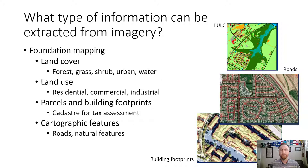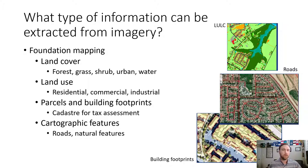What type of information can be extracted from imagery? Foundation mapping — setting the foundation for other projects in the form of land cover. So if we want to see what the dominant land cover is: forest, grass, shrub, urban, water. Land use — in the context of developed land, we can monitor the type: low density residential, high density residential, commercial, light or heavy industrial, parks, water. Parcels and building footprints — we can build a parcel dataset or cadastre for tax assessment. Cartographic features — mapping roads and natural features like streams, rivers, and mountains.